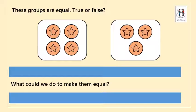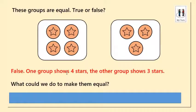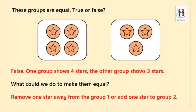These groups are equal — true or false. Count how many are in each group: the first has four, the second has three. So it's false — it's false because one group shows four stars and the other group shows three stars, so they are unequal. What could we do to make them equal? We could take one star away from the left and add it to the right one, moving from group one to group two. Or we could take one from group one away and get rid of one star — either way, it's fine.